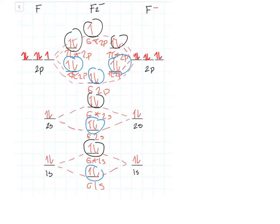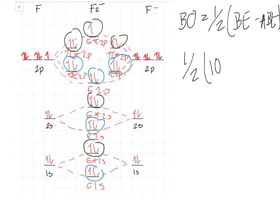To find a bond order you have to use one-half parentheses bonding electron minus anti-bonding electron. So there's going to be 10 bonding electrons minus 9, and the bond order for F2 minus is going to be 0.5.